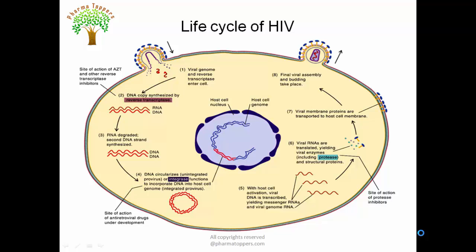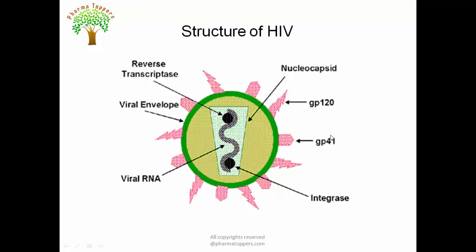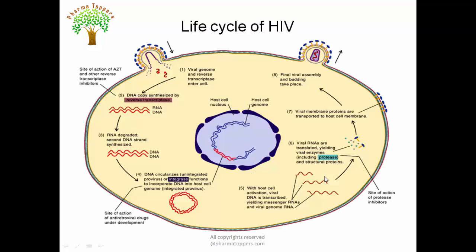Now we look at the life cycle of HIV and how the virus establishes infection. As stated previously, the protein GP41 holds the viral envelope to the host cell envelope, allowing the viral genetic material to enter the cell. Upon entry of the viral genome with reverse transcriptase, a DNA copy is synthesized. The existing RNA is then degraded and a second DNA strand is synthesized.